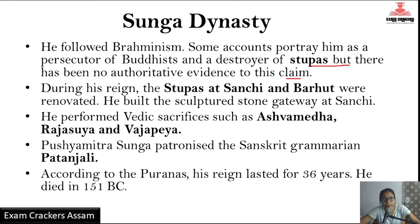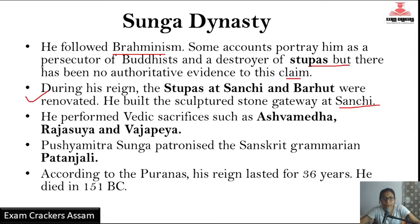Pushyamitra Sunga of the Sunga Dynasty followed Brahminism. During his reign, the stupas at Sanchi and Barhut were renovated. He built the sculptured stone gateway of Sanchi. He performed Vedic sacrifices including Ashwamedha, Rajasuya, and Vajapeya.